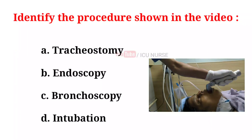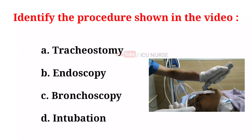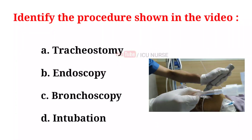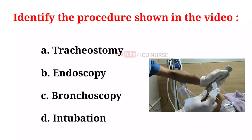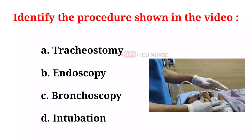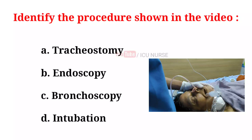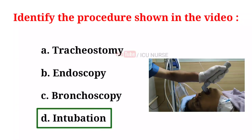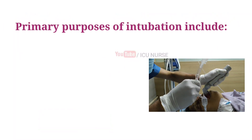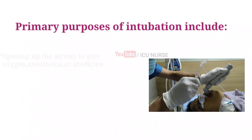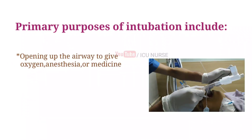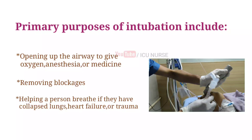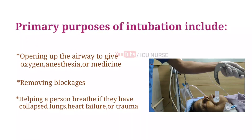Identify the procedure shown in the video. A. Tracheostomy. B. Endoscopy. C. Bronchoscopy. D. Intubation. And the correct answer is D. Intubation. The primary purposes of intubation include opening up the airway to give oxygen, anesthesia, or medicine; removing blockages; and helping a person breathe if they have collapsed lungs, heart failure, or trauma.